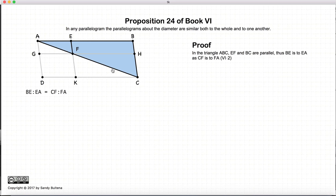So let's start with the proof. The first thing we're going to do is look at this triangle ABC. And since EF and BC are parallel, then we know that the ratio of BE to EA is equal to the ratio of CF to FA, Proposition 2 of this book.